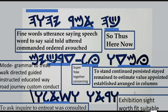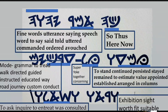The second line is Ayin-Mem-Dalit-Waw. What I could find in the dictionary was Ayin-Mem-Dalit: to stand, continued, persisted, stayed, remain — to estimate, value, appointed, established, arranged in columns. That word also has an amazingly rich definition. The next hyphenated part, Ayin-Mem-Dalit, is defined as super, yoke, together, concerning.